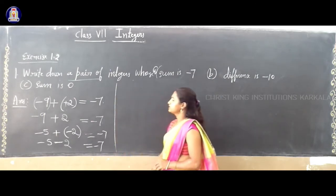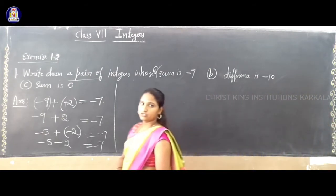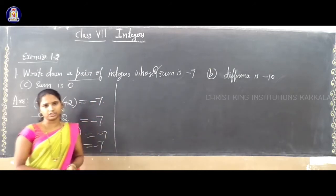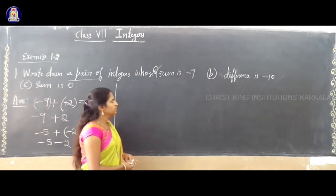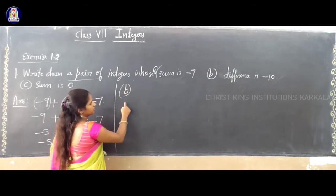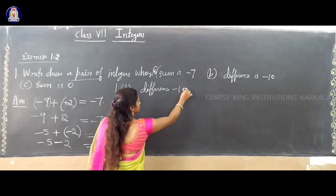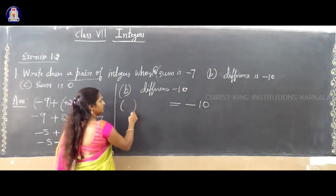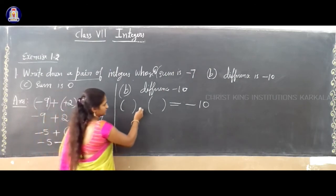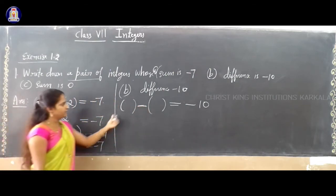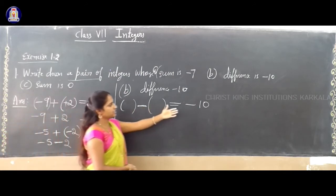Now the second question: write a pair of integers whose difference is minus 10. Difference means subtraction, so after subtracting two integers the answer must be minus 10. In between the two integers you will write a minus sign because we are finding the difference, and the difference is minus 10.